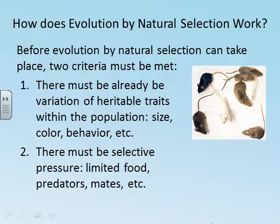The second criterion is that there must be some sort of selective pressure. In a perfect world with no predators and unlimited food and mates, all individuals can survive and reproduce, so no selection is necessary.